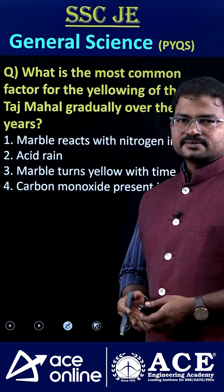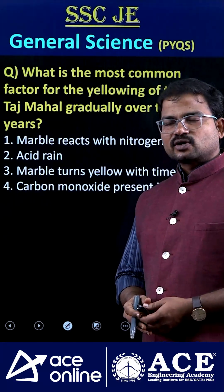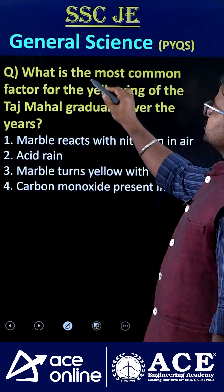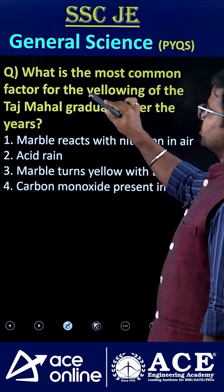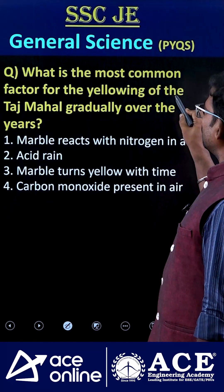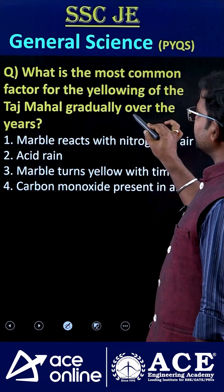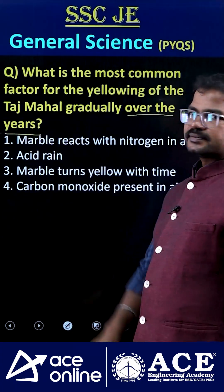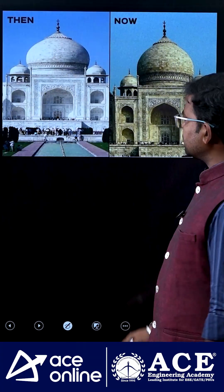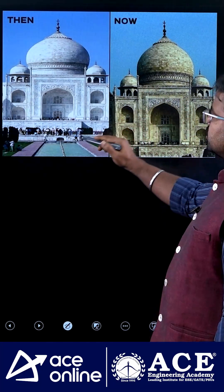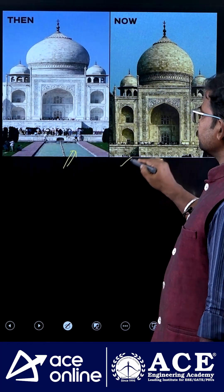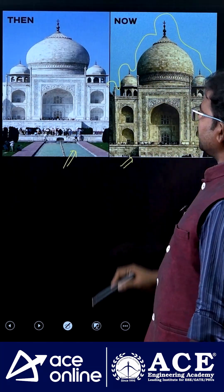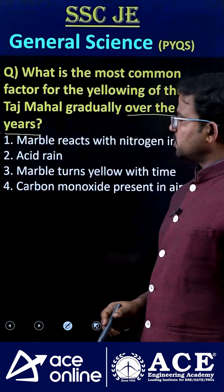Welcome to Ace Online. I am Lankeshwar of the Science and Technology and General Science faculty. What is the most common factor responsible for the yellowing of the Taj Mahal gradually over the years? The Taj Mahal's color has completely changed — initially it looked like this, but now it has been converted to this appearance. So which phenomenon is responsible for that?